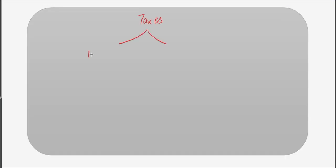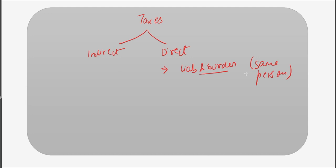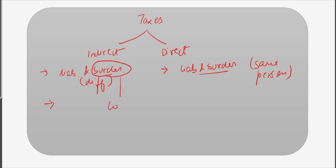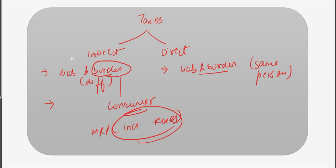There are two types of taxes: indirect tax and direct tax. In direct tax, the liability and the burden to pay that tax fall on the same person. For example, when you pay income tax, the liability and the burden both fall upon you — you cannot shift the burden to someone else. In indirect tax, the liability and the burden fall on different people: it is the liability of the seller to pay the tax, but the burden falls upon the consumer. You must have seen while buying any product that the MRP is inclusive of all taxes — those taxes include indirect tax, and therefore this kind of tax can be shifted from seller to consumer.